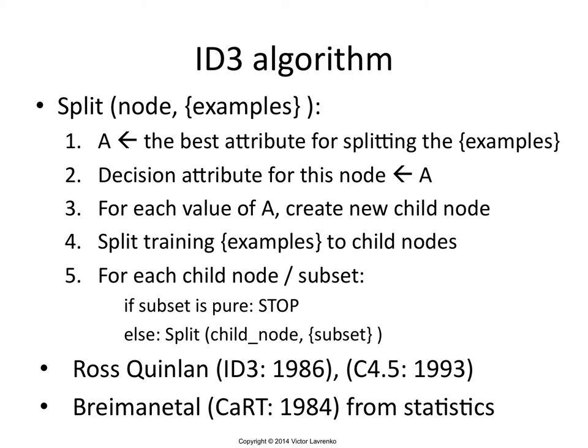What we'll talk about now is how do you pick the best attribute, because that is really the crux of the algorithm. If you can pick the best attribute effectively, this all works out really, really nicely. If you pick a bad attribute to split on, you're going to get very bad trees. So how do you pick the best attribute?